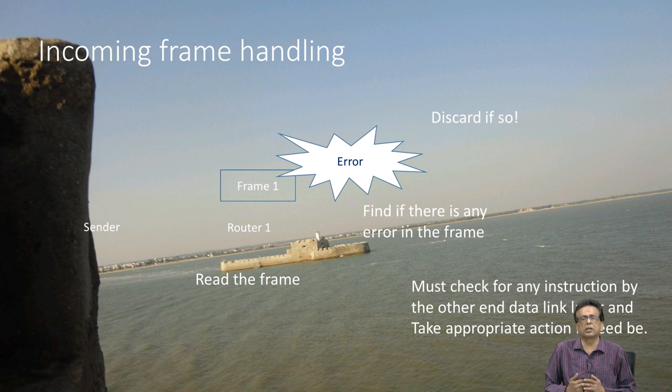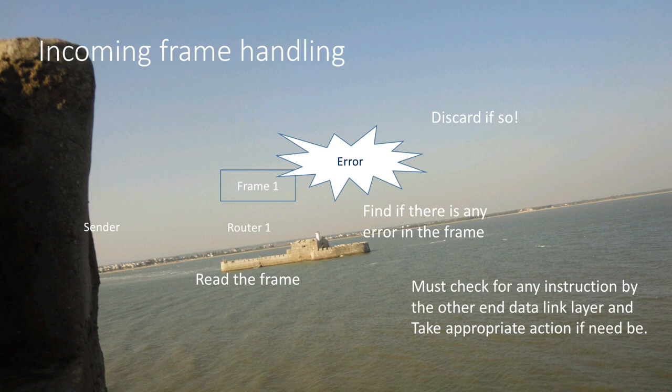It checks for any instruction by the other end data link layer. For example, there is an instruction to look at the final content and find out if the sender is authenticated or not. There are many ways of sending commands at the other end. If there is no error, the receiving data layer has to process it and take an appropriate action if need be — for authentication, it might need to calculate something.